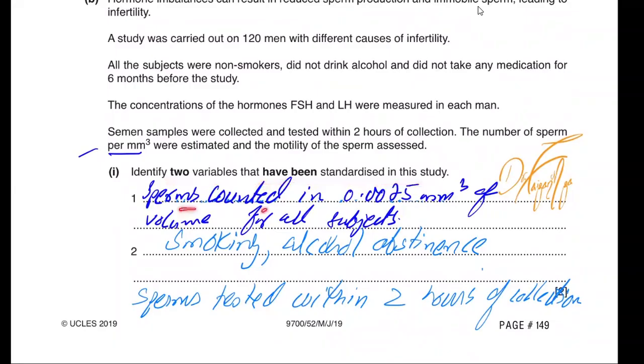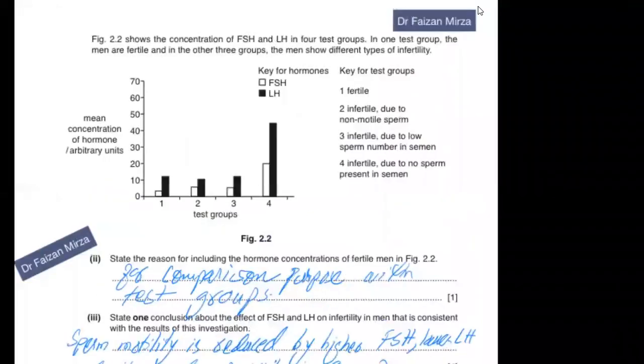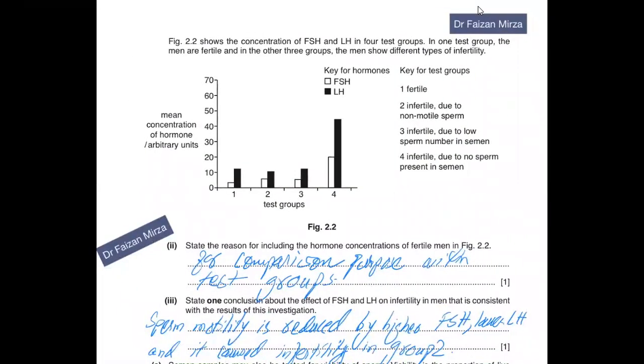Identify two variables that have been standardized in this study. Sperm will be counted in the same volume of 0.0025 millimeter cube of diluted sample. There was abstinence from smoking and alcohol. Sperm were tested within two hours of collection. You can mention any two of these which were standardized. The bar chart is partly a bar chart and partly a histogram showing comparative bars.